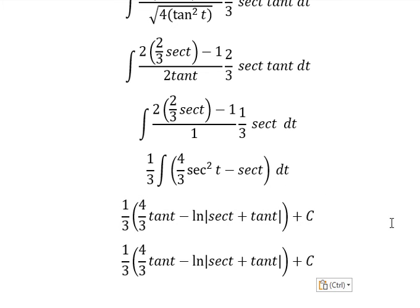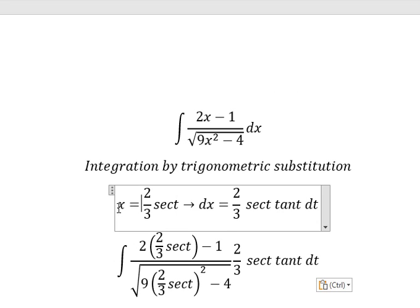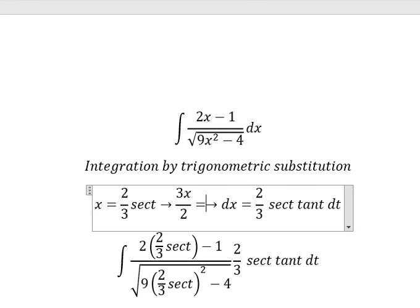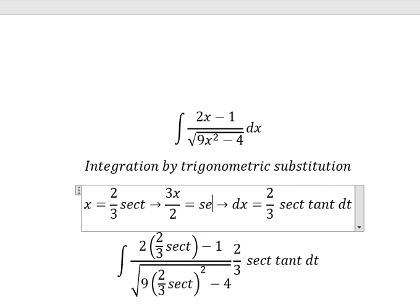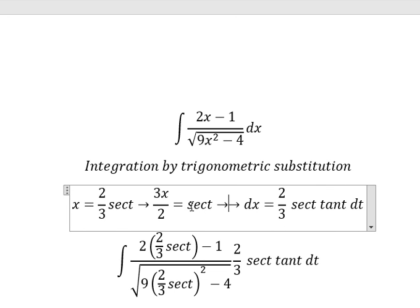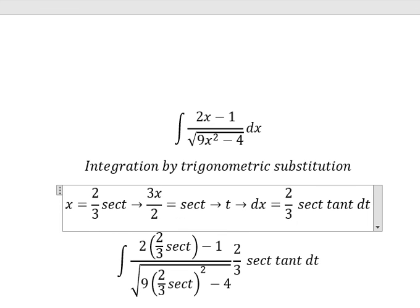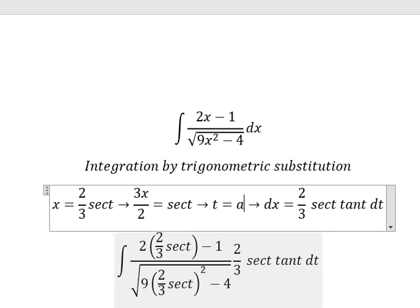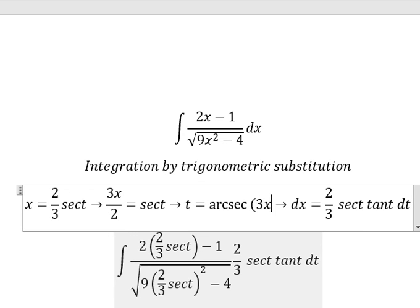So about t, that is about this one. So we divide both sides by 2 over 3. So we have 3x over 2 equals to secant of t. And then we can find the value of t. And you get arcsecant of 3x over 2.